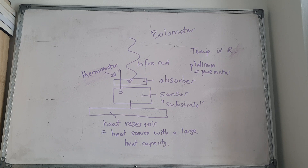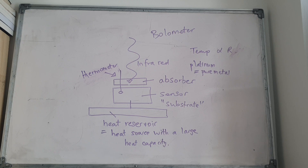A thermistor could be used as a bolometer. The absorber could be platinum metal — in the earliest bolometers in history, they used a thin black platinum metal. So a bolometer is a measuring device: when incident infrared light hits the absorber, there is a change in resistance.